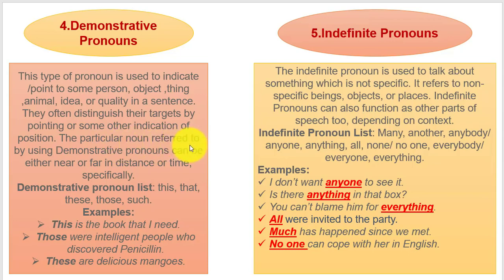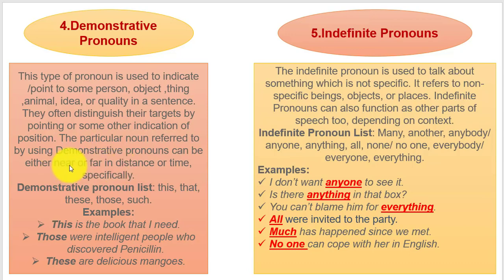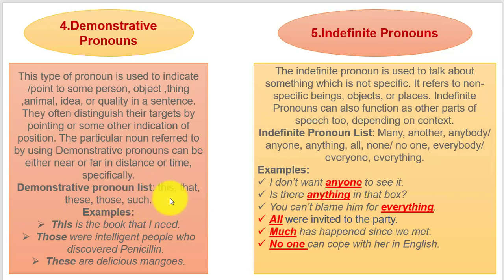The particular noun referred to by using a demonstrative pronoun can be either near or far in distance or time. The demonstrative pronoun list is: this, that, these, those, such. These are the whole category of demonstrative pronouns.